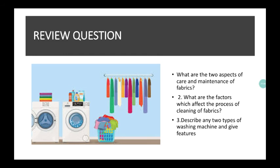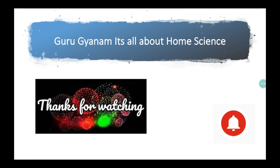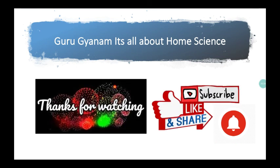This is all about the part 1. There is a review question for you. Write down what are the two aspects of care and maintenance of the fabric. Question number 2, what are the factors which affect the process of cleaning of the fabric? And question number 3, describe any two types of washing machines and give the features. In next part of care and maintenance of the fabric in institution, you will be studying about the hospital laundry and hostel laundry and how to prepare a career in this field. That's all about this video. Thanks for watching Guru Gyanam. It's all about home science. Don't forget to like, share and subscribe my channel and press bell button. Thank you so much.